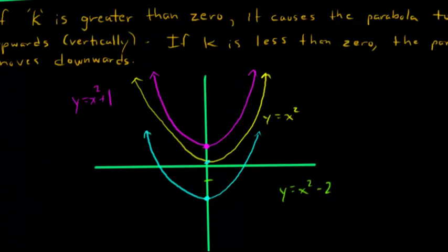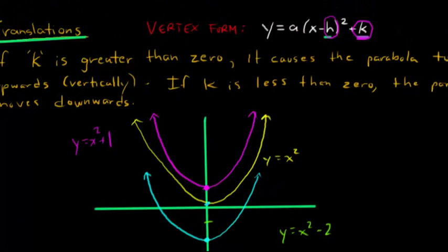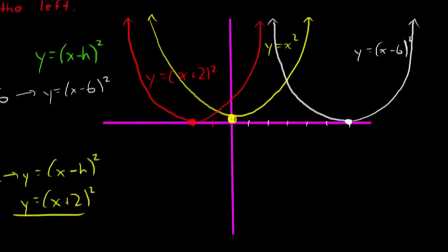So that's what h does, and this is what k does, and we have already seen what a does. Can we use all 3 together to move a parabola all over the place? Well absolutely we can. So let's take a look. So here I'll write it out again, y equals a times x minus h squared plus k.